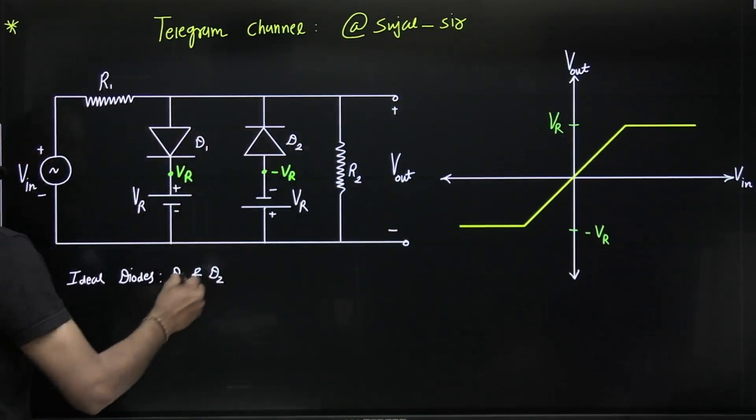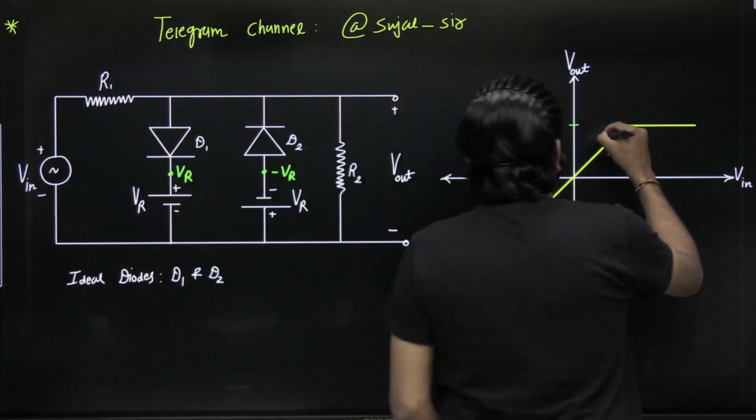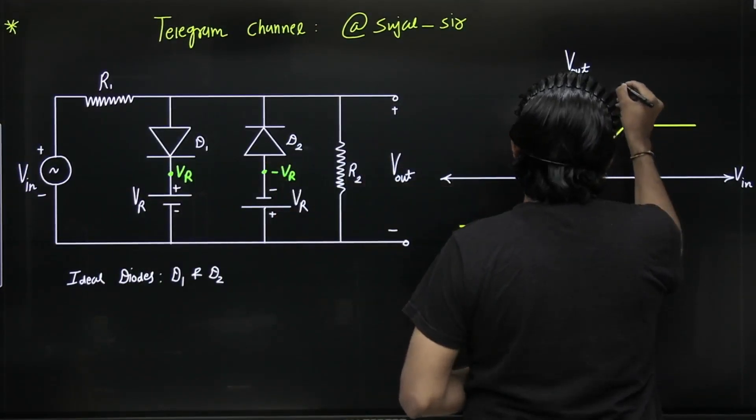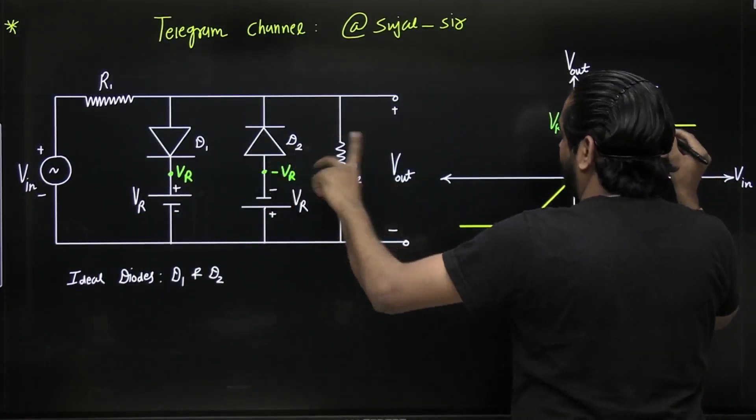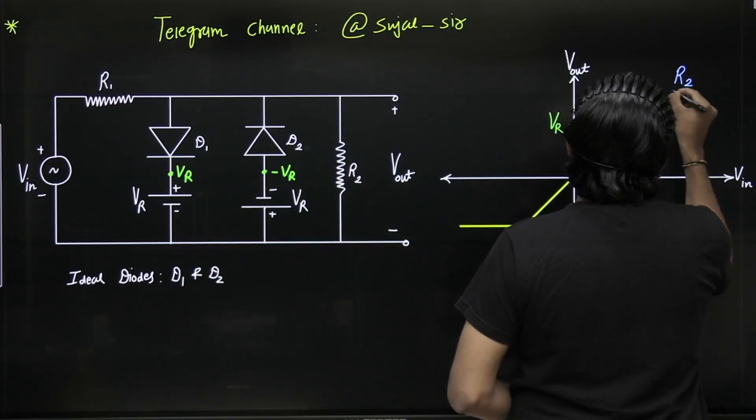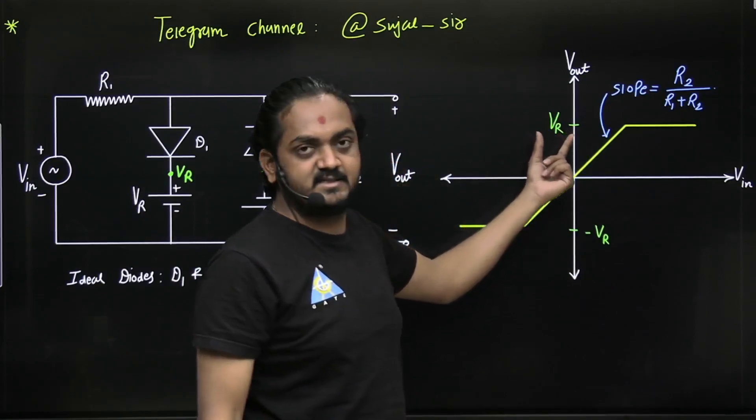Now what about slope? So here slope is nothing but simple voltage divider, that is R2 divided by R1 plus R2.